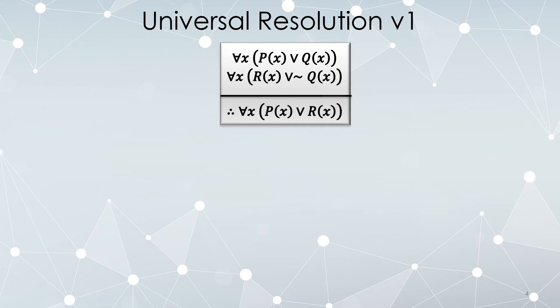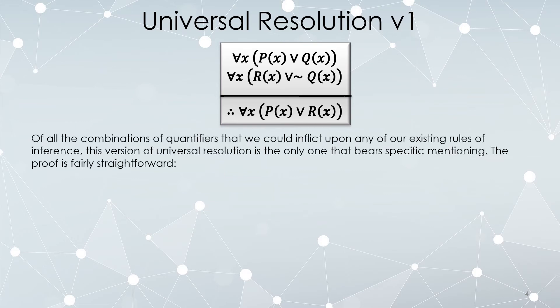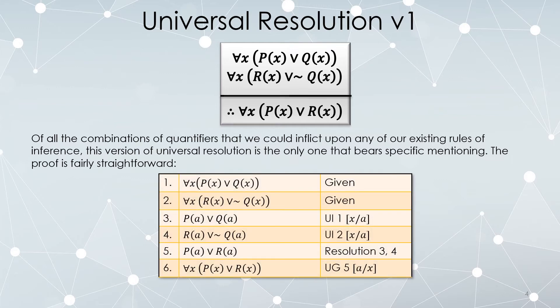Okay, here's a version of a universal resolution. For any x, either P or Q. For any x, either R or not Q. Therefore, for any x, either P or R. Of all of the various combinations of quantifiers that we could stick on forms of resolution, this is one that bears particular attention. And the proof is fairly straightforward. So again, we state our two givens. Here they are.